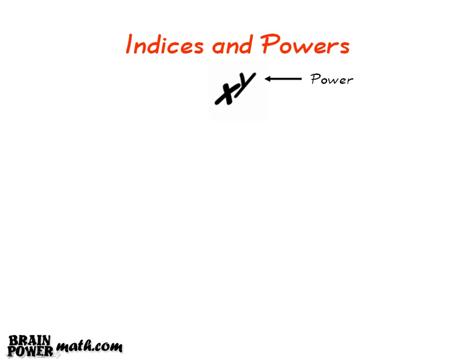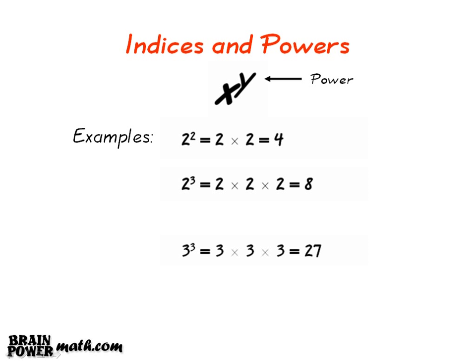A few examples of powers will now be coming up on the screen. You can also see how these powers are simplified down. We have 2 squared is equal to 2 multiplied by 2, which is equal to 4. 2 cubed is equal to 2 multiplied by 2 multiplied by 2, which is equal to 8. 3 cubed is equal to 3 multiplied by 3 multiplied by 3, which is equal to 27.